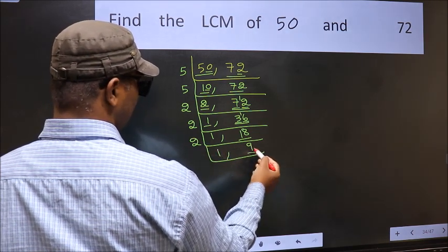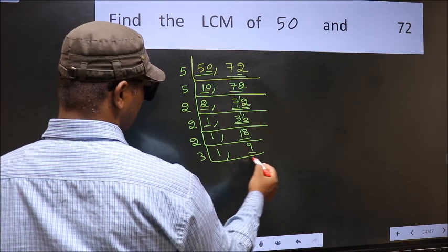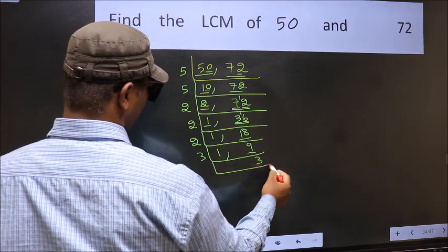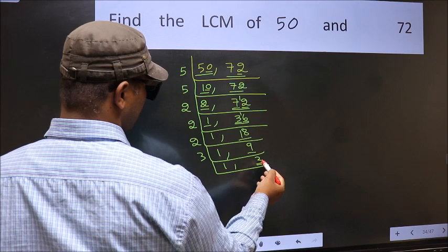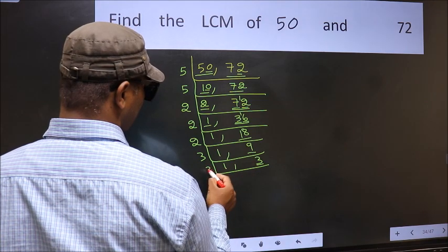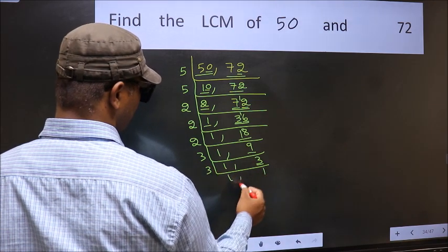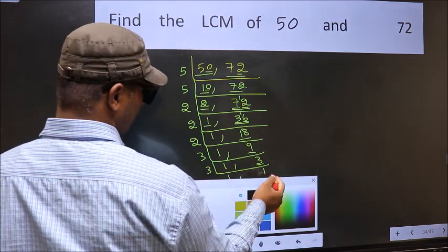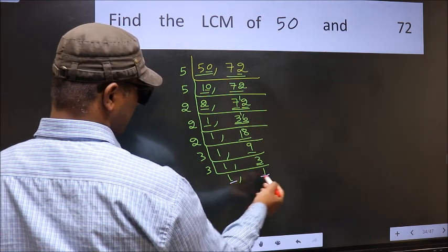Now we have 9. 3 times 3 is 9. Now we have 3. 3 is a prime number, so 3 times 1 is 3. We got 1 in both places.